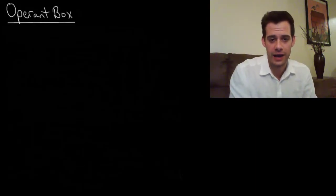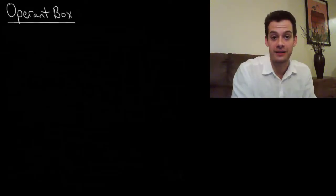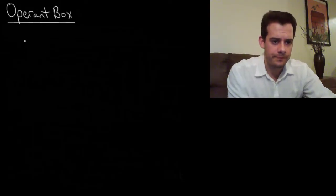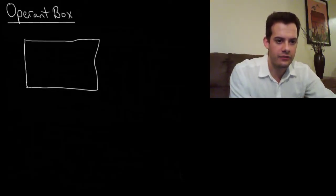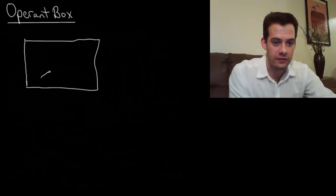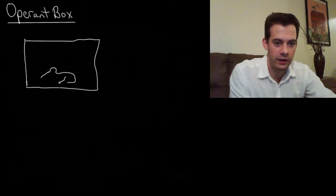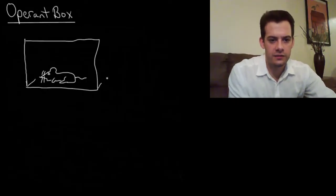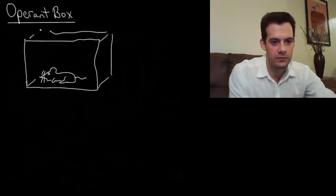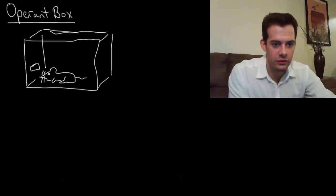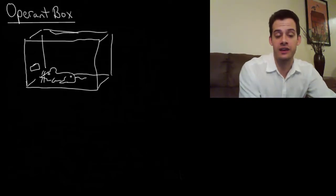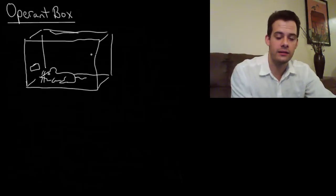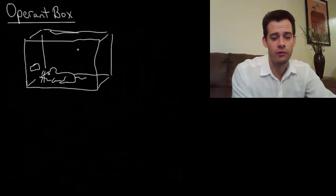First we'll look at a device that Skinner created called an operant box, although other people have referred to it as a Skinner box. An operant box was a box that allowed Skinner to track behavior over time. Inside this box we'll have some animal — so here's a rat — inside of this operant box, and the box contained a section where food could be dropped in. The animals Skinner used, the rats and the pigeons, were kept a little bit underweight — about three quarters of their normal weight — to ensure that they're always hungry and therefore always motivated to learn.